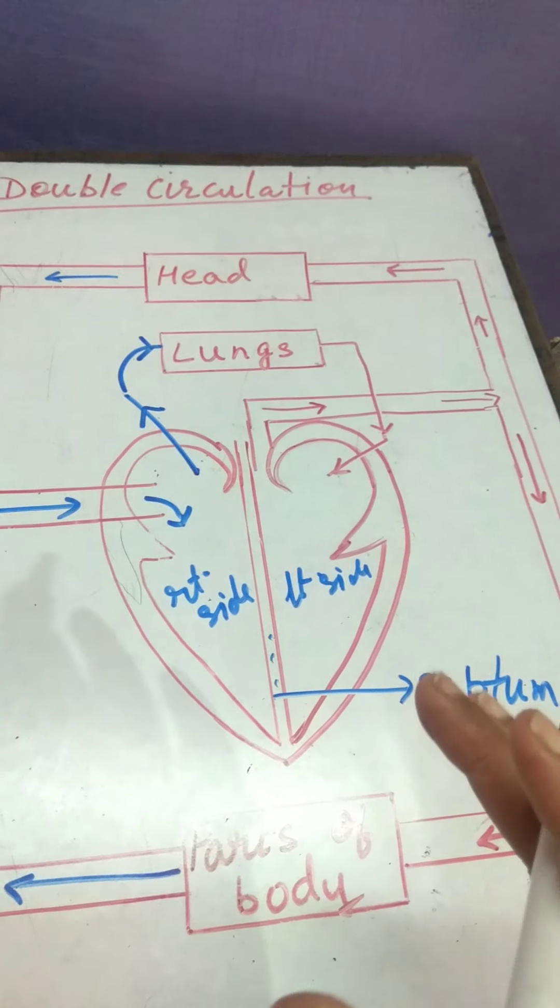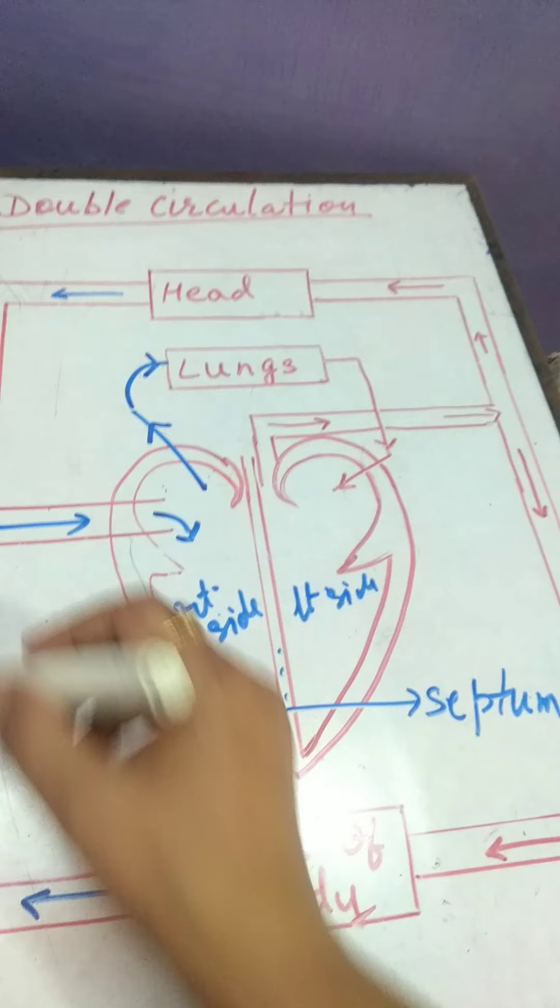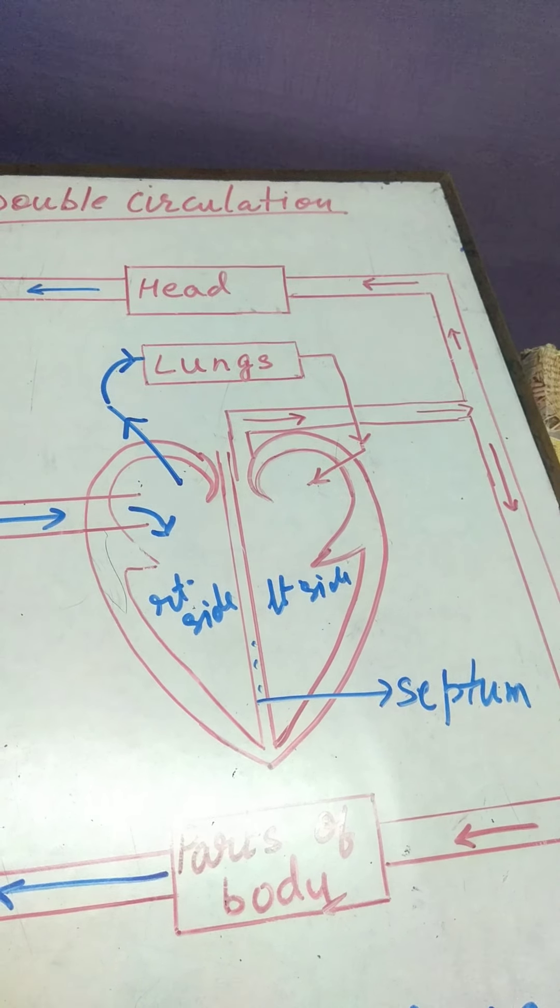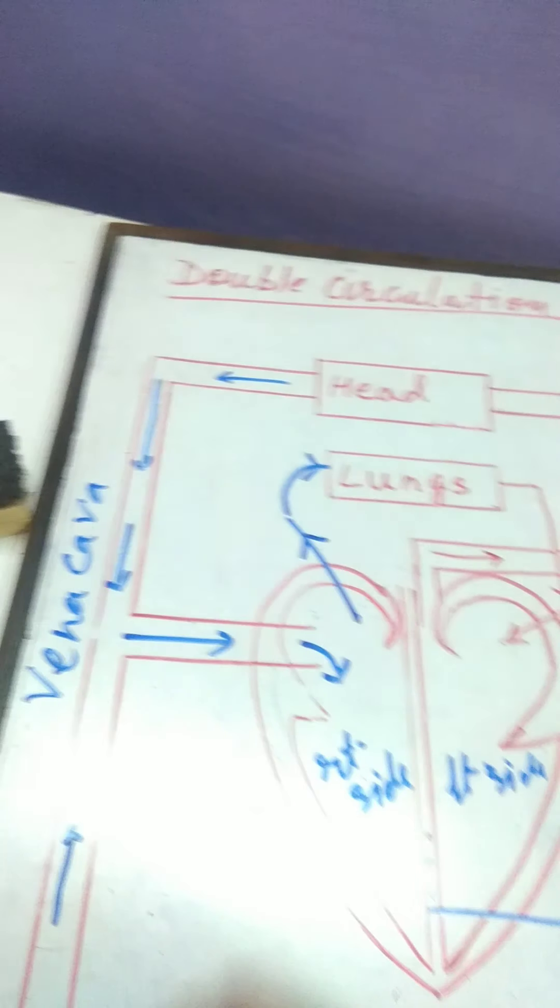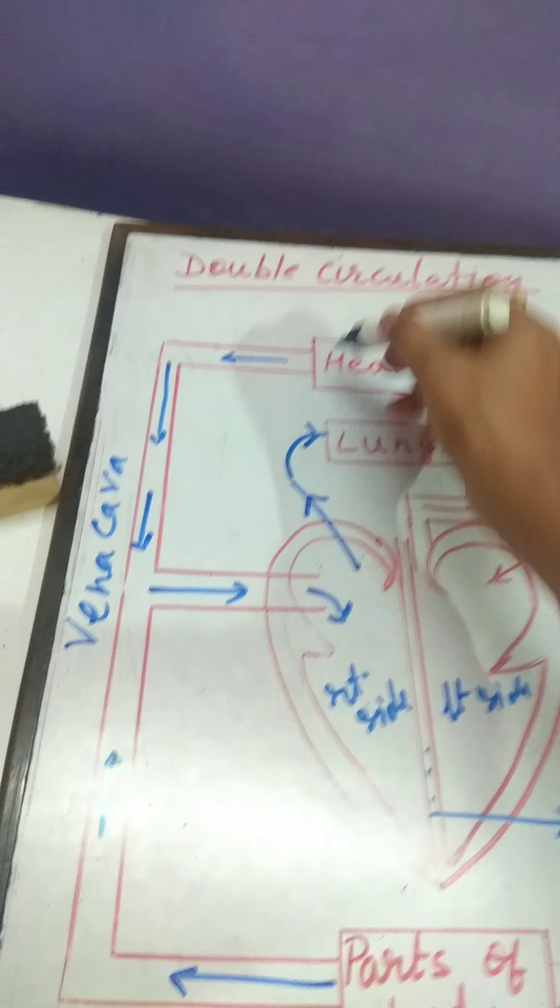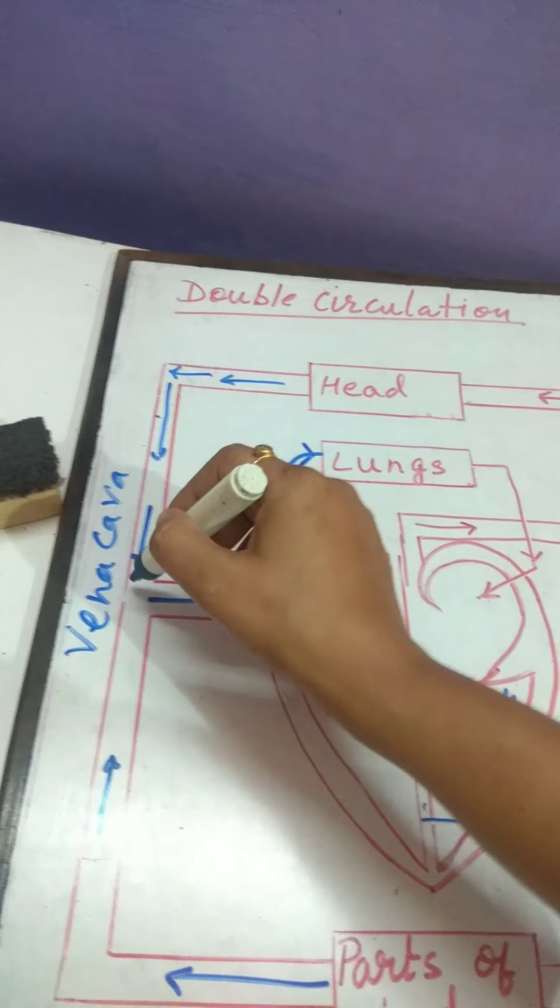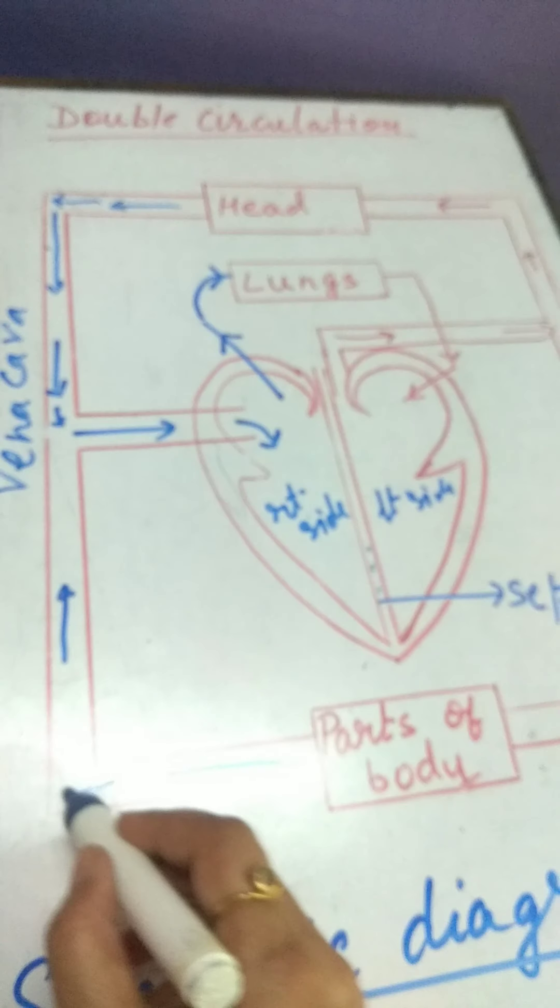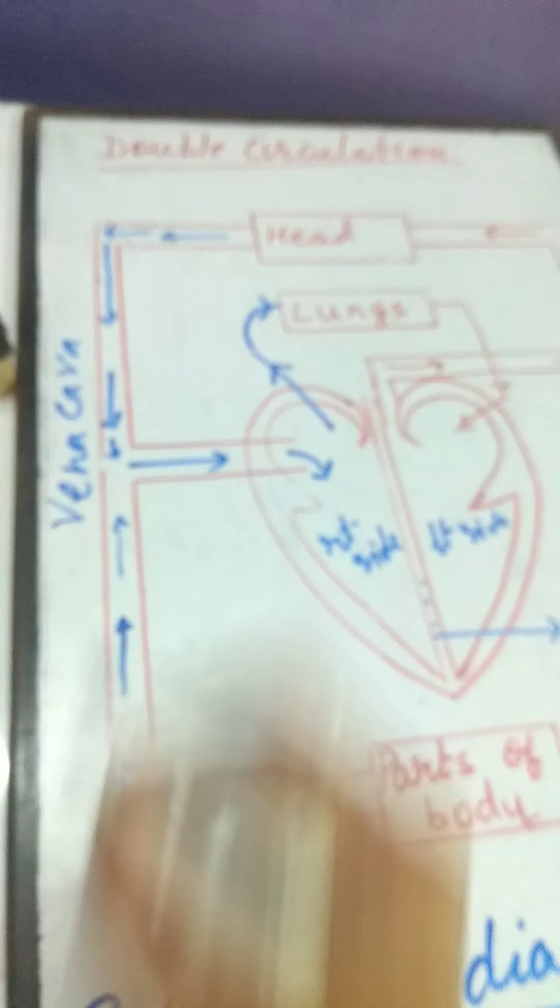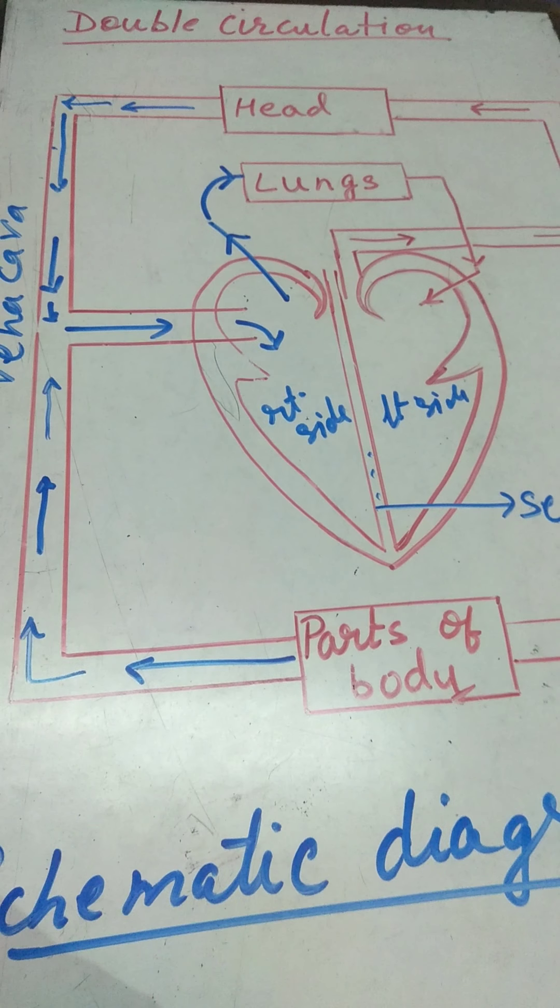Now, see how the mechanism works. First, this is known as superior and inferior vena cava. These are vena cava or in simple language, we can say it is vein. Vein which carries impure blood from upper part of the body is known as superior vena cava and vein which is carrying impure blood from other part of the body, it is termed as inferior vena cava.